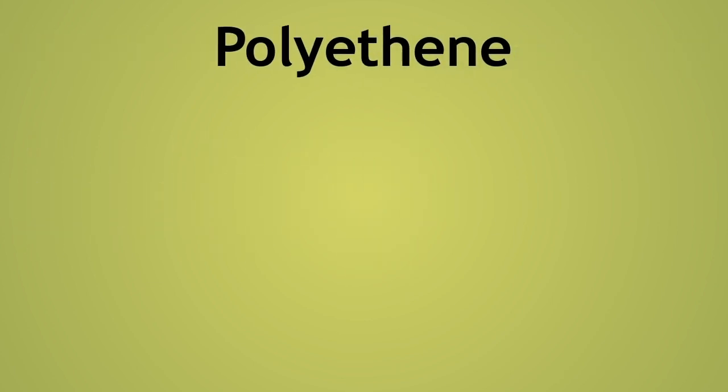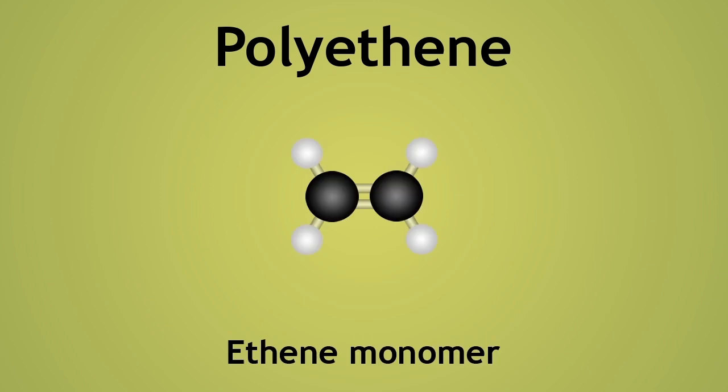For example, polyethene, also known as polyethylene, is a polymer of ethene monomers.